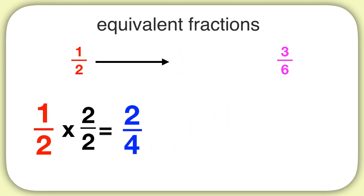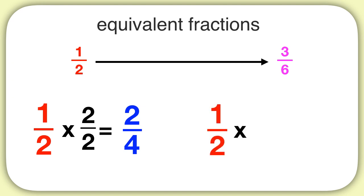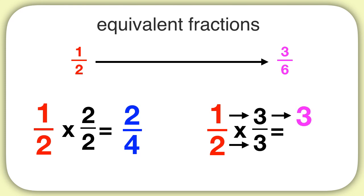But what if I wanted to make 1 half into 3 sixths? We can take 1 half and multiply by 3 over 3. 1 times 3 is 3, and 2 times 3 is 6. There is our equivalent fraction 3 sixths.